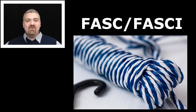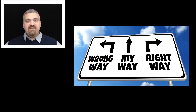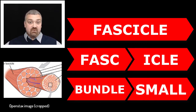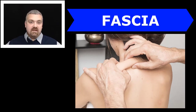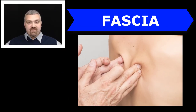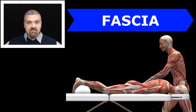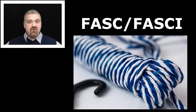Next we have fash or fasci, which means bundle. Think fascicle — a fascicle is a bundle of skeletal muscle fibers that form larger units, which are your muscles. Then we have fascia, a term being used a ton over the last few years. Fascia is the connective tissue around your body structures that bundles them together, compartmentalizes your body, and connects every part of your body to everything else. Fascia is essentially a bundling or packaging material that holds your body together.